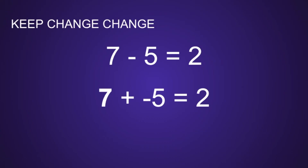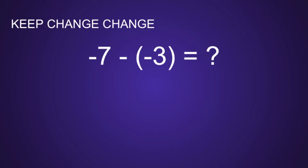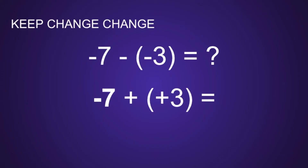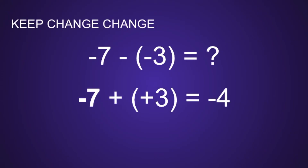Keep change change really comes in handy when you have a problem that looks like this: negative 7 minus a negative 3. That's a lot of negative signs. We can use keep change change to make this problem a lot easier. We keep that first number the same, change the minus sign to a plus sign, and then take the opposite of the last number. The opposite of a negative 3 is a positive 3. And negative 7 plus 3 is equal to negative 4. See how much easier it was after we applied keep change change?